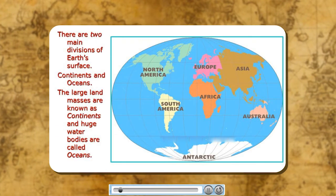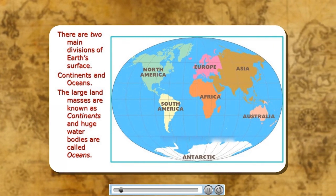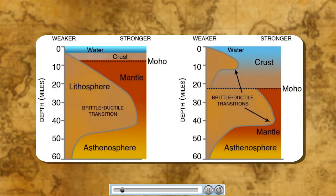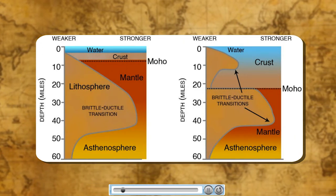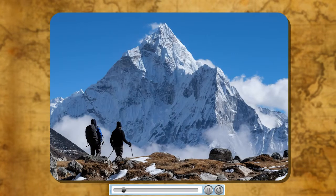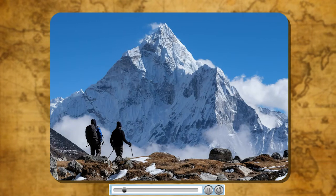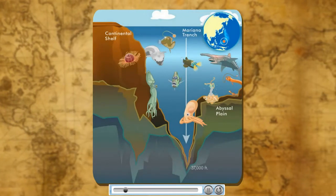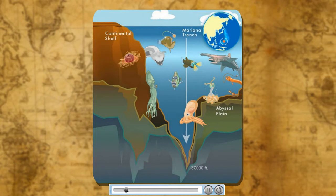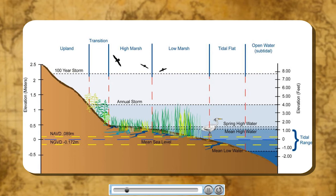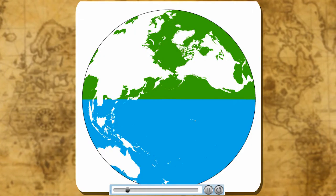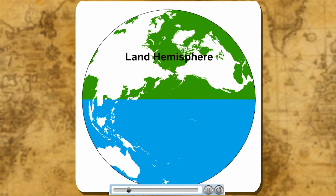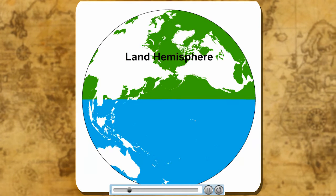There are two main divisions of the Earth's surface. The large land masses are known as continents and the huge water bodies are called oceans. However, under the oceans, the lithosphere is only a few kilometers thick. All the oceans are interconnected with each other. The highest point on the Earth is Mount Everest in Nepal, which is 8,848 meters high from the sea level. The greatest depth of 11,022 meters has been recorded at Mariana Trench in the Pacific Ocean. The elevation of land is measured from the level of the sea, which is taken as zero. Most of the land is concentrated in the Northern Hemisphere, called the Land Hemisphere, while the Southern Hemisphere has a predominance of water and oceans, hence called Water Hemisphere.